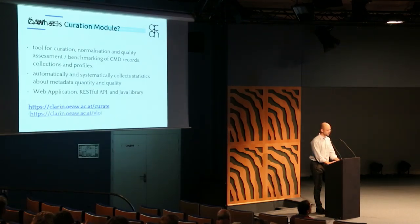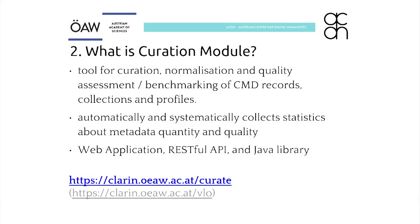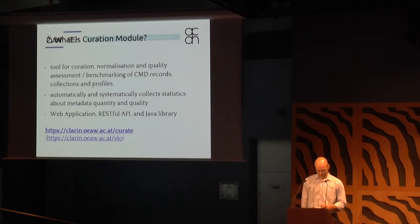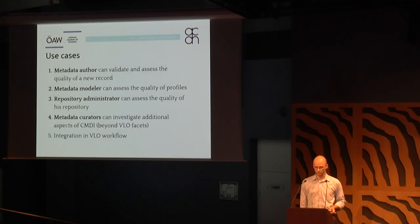So what is the curation module? The idea is a tool for curation and normalization and quality assessment, especially of CMDI metadata. It's actually a bit of a misnomer right now — 'curation' — because it's really primarily doing metadata quality assessment. The idea is to systematically and automatically collect statistics and assess the quality of CMDI records. It's a Java library with an API and also a simple web application on top of it.